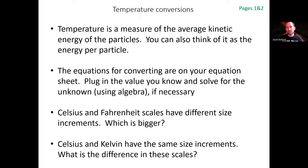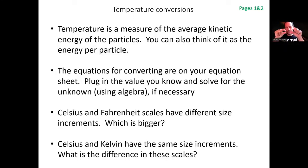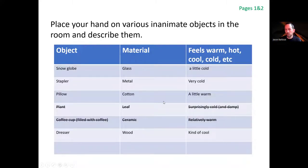So absolute zero is −273.15°C. The Kelvin scale sets that as zero, using the same size increments as Celsius. So the conversion between Celsius and Kelvin is just adding or subtracting 273.15 — no multiplication factors.